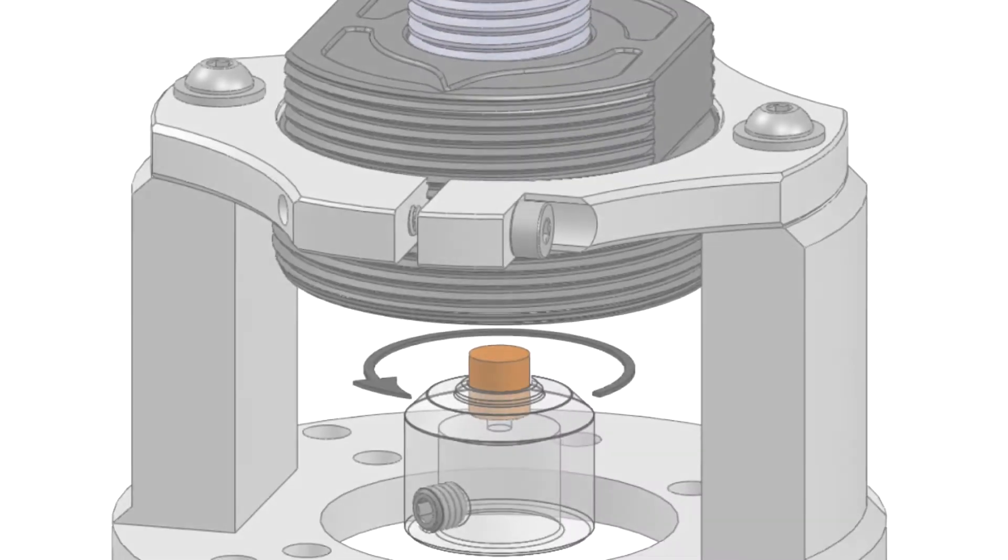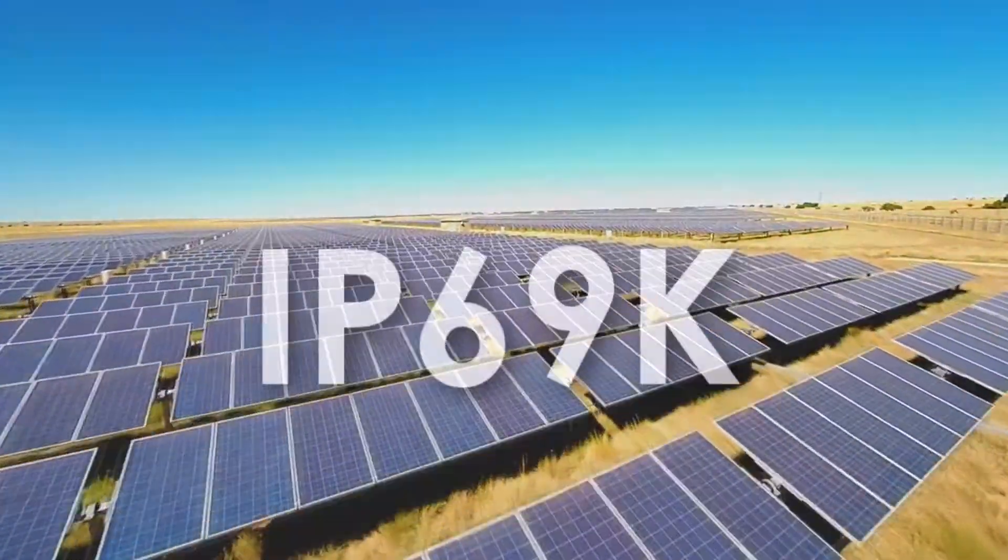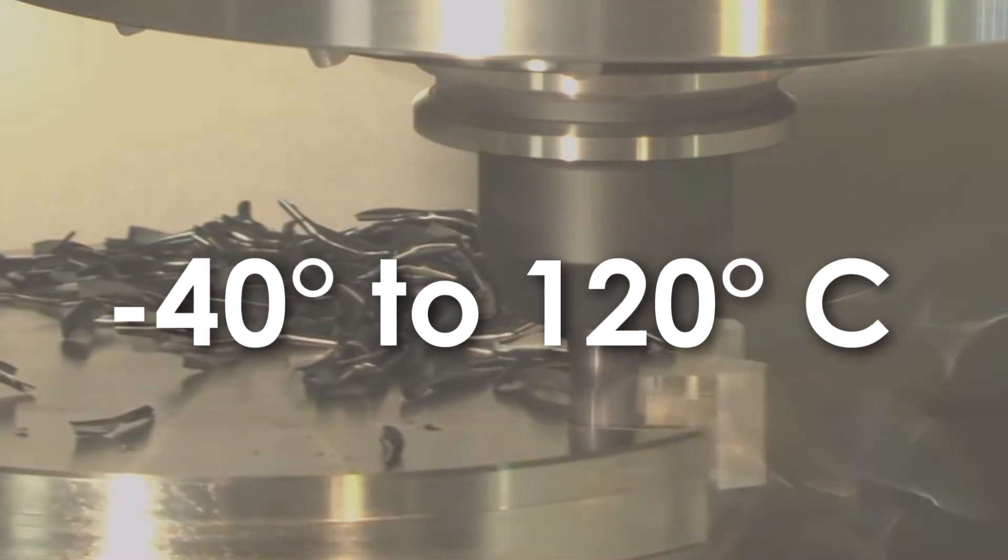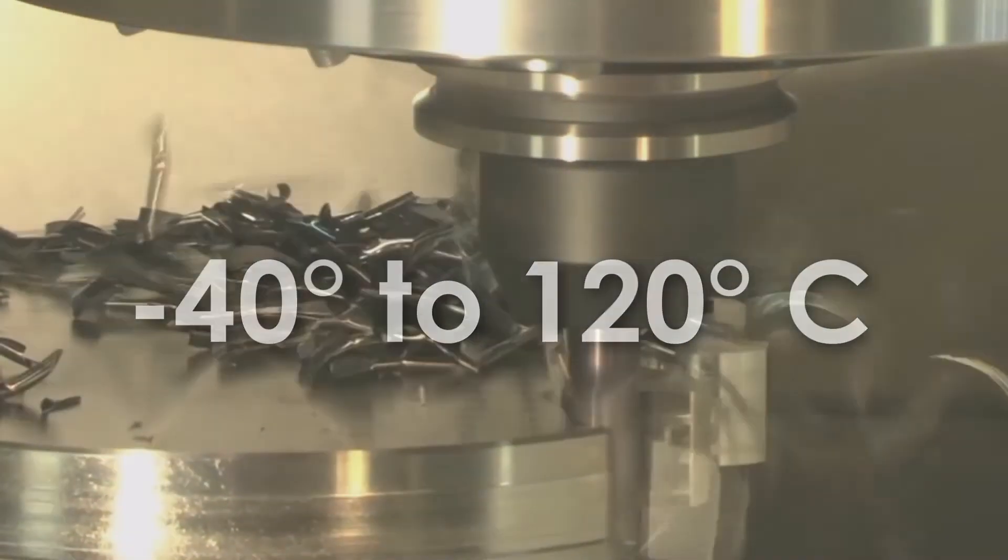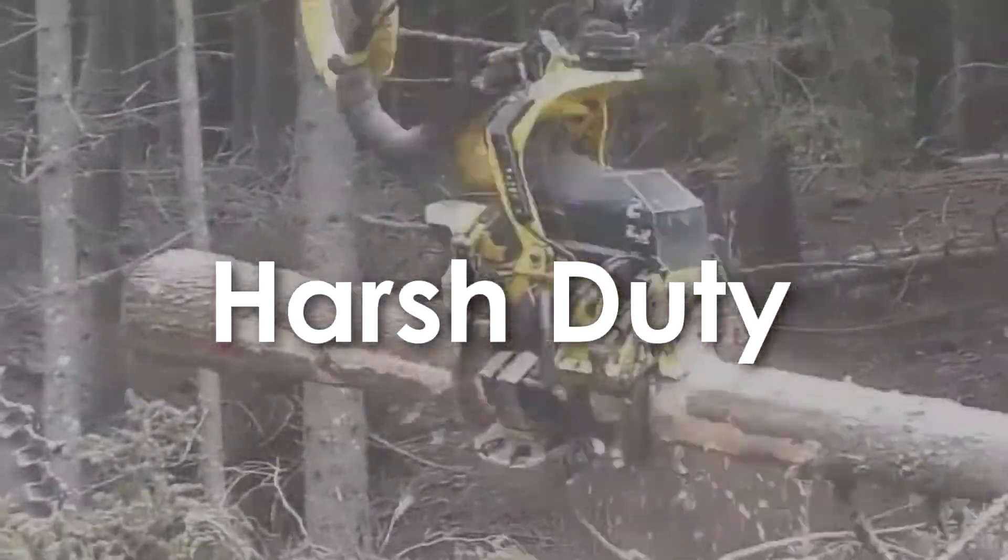The model 30MT provides non-contact rotary encoder feedback. And with the optional IP69K environmental seal, a temperature range from minus 40 to 120 degrees Celsius, and high shock and vibration ratings, it's ideal for use in harsh environments.